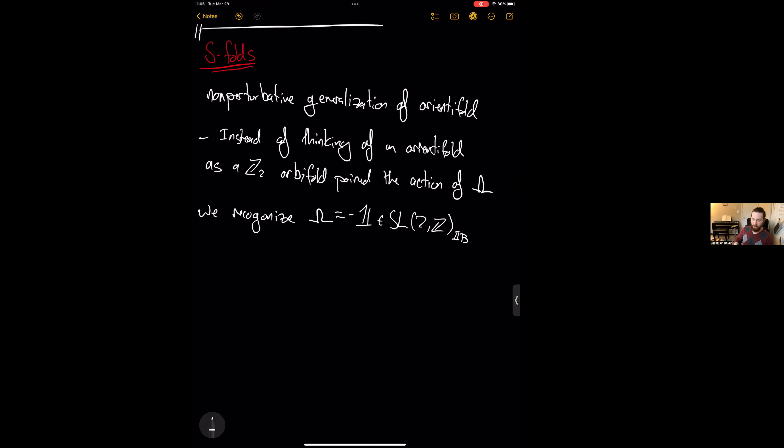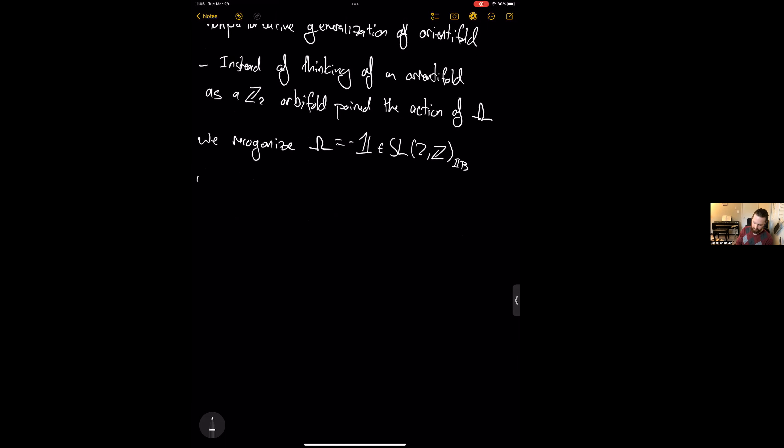And so in this way we can associate an orientifold with just like a purely spatial Z2 quotient of F-theory. All right, so we have the usual Z2 orbifold on the physical spacetime as well as this Z2 action given by minus one in SL2Z acting on the F-theory torus. So now the idea is that we generalize this by taking Z2 to be some other cyclic group ZK.